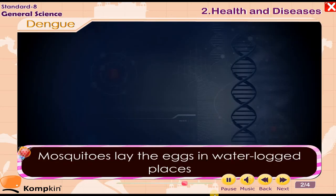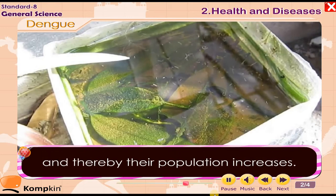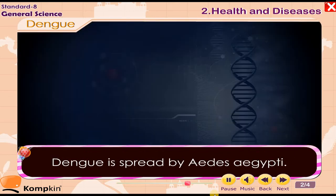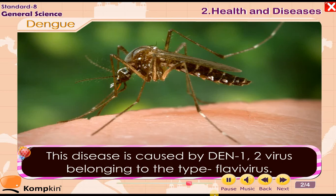Dengue: Mosquitoes lay eggs in waterlogged places, thereby increasing their population. Different species of mosquitoes spread different diseases. Dengue is spread by Aedes aegypti. This disease is caused by DEN-1-2 virus belonging to the type Flavivirus.